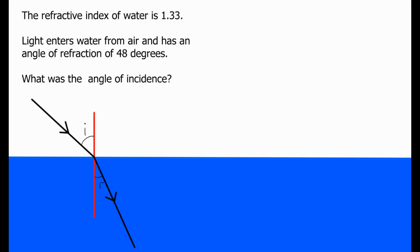So as we normally do, we start by writing down everything that we know and everything that we don't know. We know that the refractive index of the glass is equal to 1.33. We know that the angle of refraction is equal to 48 degrees. And the angle of incidence is the thing that we don't know.